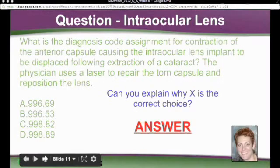The first question is an ICD question. At first I thought it was maybe procedural and I saw the title intraocular lens. But the student asked, what is the diagnosis code assignment for contraction of the anterior capsule causing the intraocular lens implant to be displaced following extraction of a cataract? The physician uses a laser to repair the torn capsule and reposition the lens.